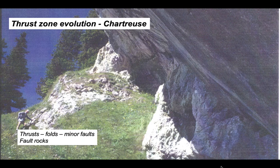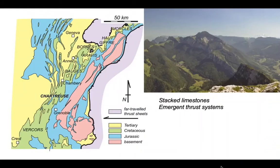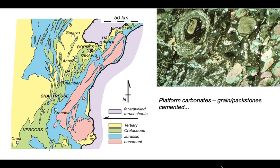We can look at the thrusts and how they relate to fold structures, and particularly how these folds host minor faults, smaller scale thrust structures, and are important damage features within the scale of the folds themselves. We'll also look at the different fault rocks these structures contain. The thrust belt consists of stacked Mesozoic limestones, and these thrust systems were emergent to the Earth's surface. Deformation was occurring at around about 80 degrees centigrade. The rocks we're going to be looking at are platform carbonates — grain or pack stones. They're fully cemented, as you can see on this photomicrograph, which is about three millimetres across, with all sorts of different sedimentary grains, some of them coated, but a very tight rock.